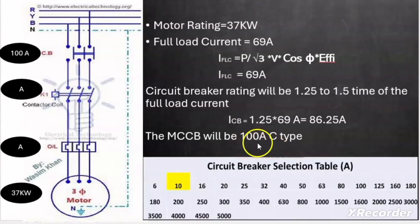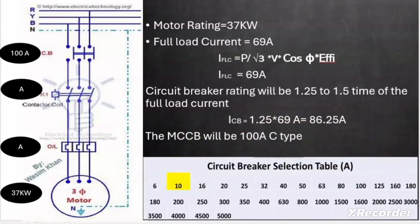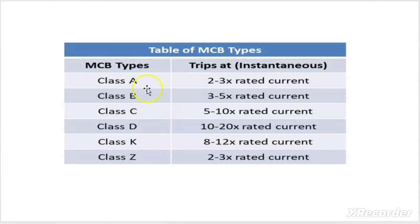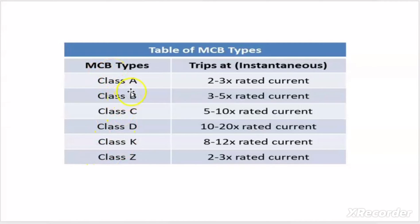Apart from the 100 ampere rating, I also specified C type for the MCCB. MCBs and MCCBs come in different types: class A, class B, class C, class D, class K, and class Z. These are called curve ratings of the circuit breaker, and this rating is very important. The curve rating allows the MCCB or MCB to not trip at the time of starting even though the current exceeds the rated current.